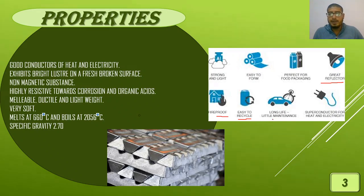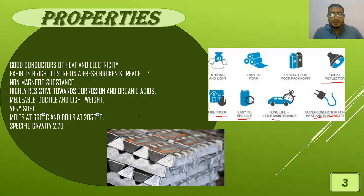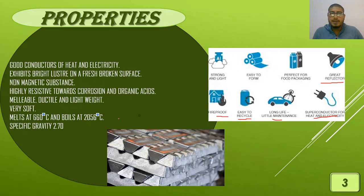Aluminum has very long life with very little maintenance. It is used in superconductors for heat and electricity due to its cryogenic nature. It exhibits very high luster on a freshly broken surface — whenever maintenance is needed, a coat of aluminum paint gives it a very new look. It is a non-magnetic substance, highly resistant toward corrosion and organic acids, malleable, very lightweight and very soft. It has a high melting point of around 650–660 degrees centigrade, a boiling point of around 2000 degrees centigrade, and a specific gravity of about 2.7.